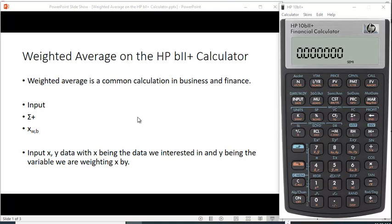To do this we use these keys on the financial calculator. We're going to use the input key and the sigma plus key to put the data in, and then we're going to use the X bar W comma B key, which is right here under the six key, to do the calculation.